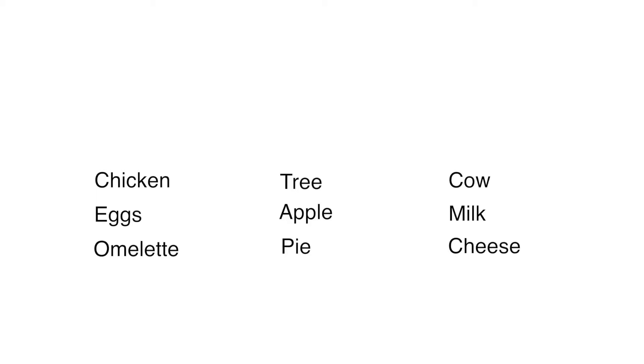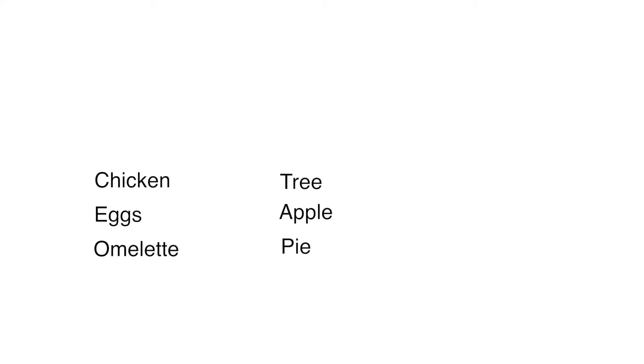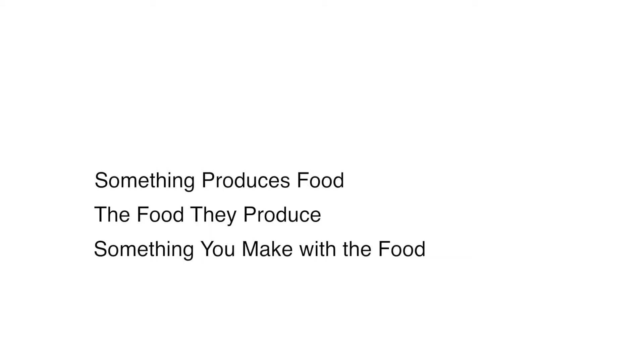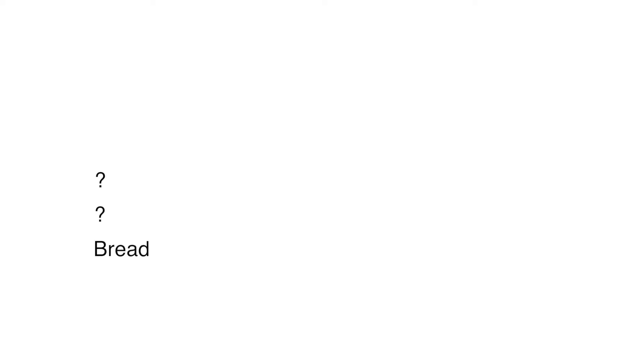Let's try it again with something else and this time look for the pattern. The nine words were: chicken, eggs, omelet, trees, apple, pie, cow, milk, and cheese. You probably did much better because you recognize the pattern of something that produces food, the food they produce, and something you make with the food. Knowing this pattern helps you figure out the answer instead of memorizing the answer, even if you have never seen it before. Using the pattern, if the last one was bread, a good guess would be flour and wheat — because you know the pattern.